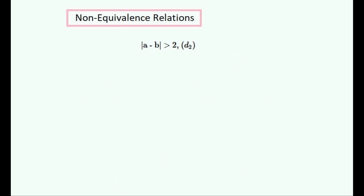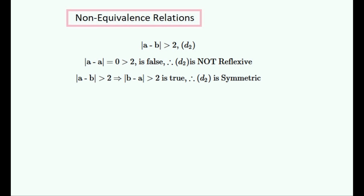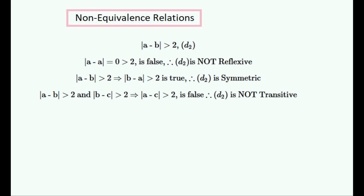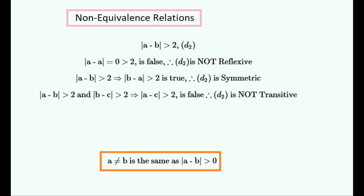Let's try this second distance inequality, where the distance between two numbers has to be greater than 2. It is obviously not reflexive because the distance of a number from itself is always 0 and therefore never greater than 2. It is symmetric because the distance between two points is always the same, and if it is greater than 2 it will stay greater than 2. But it is not transitive — a number C being further away from B than 2 doesn't guarantee it being greater than 2 away from A.